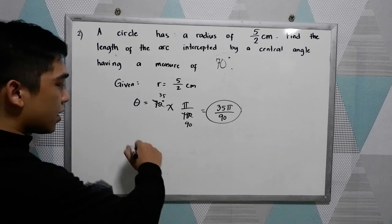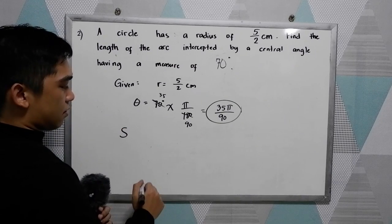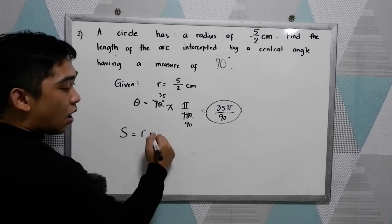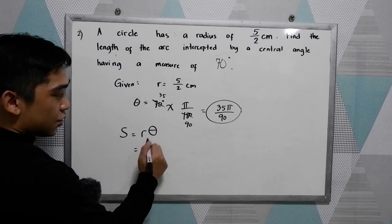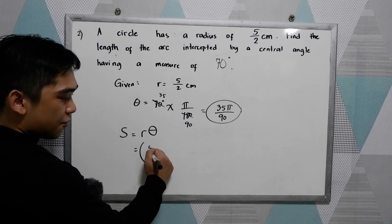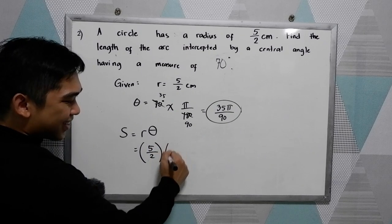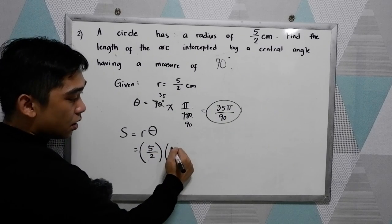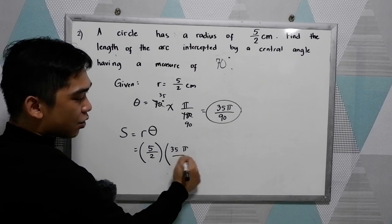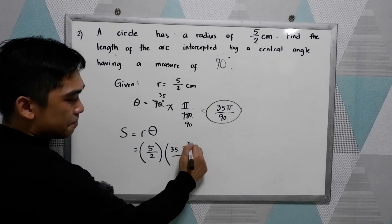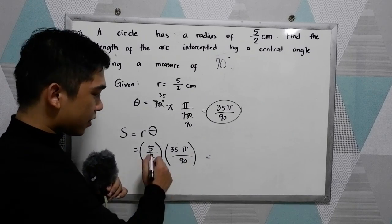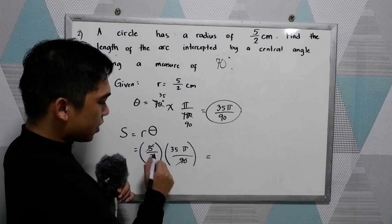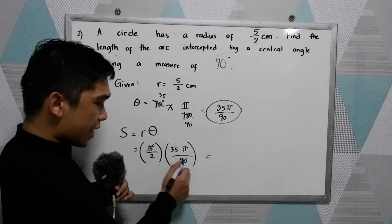So we're looking for the arc length. So that is equal to radius times the central angle. So the radius is 5 over 2 times 35 pi over 90. Okay. So cancellation method. So we now have divisible by 5.